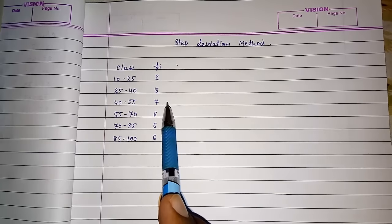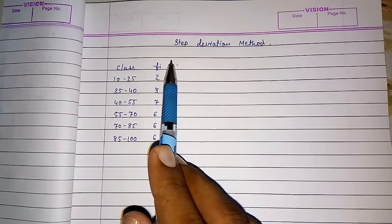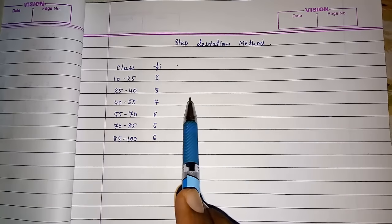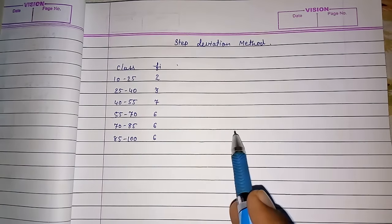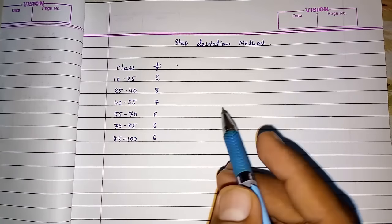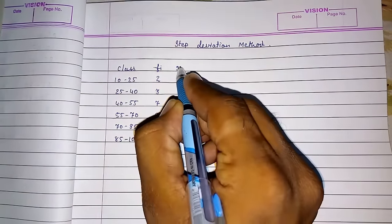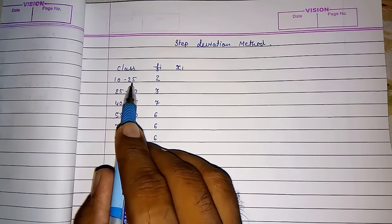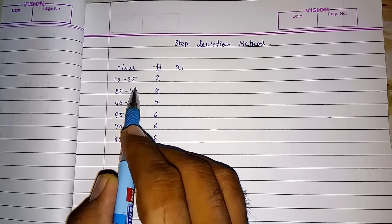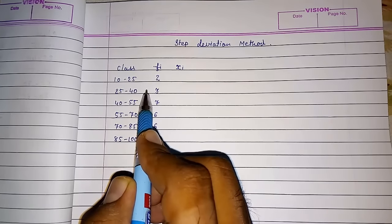In my previous video I had explained you about assumed mean method. The same way you have to start the same things and you have to do the same procedure but at one point you have to do little bit changes in the method. So first we will find xi. xi means the midpoint of these two. If you had not watched my previous video please watch it so that it will be easy for you what I had explained deeply in that video.